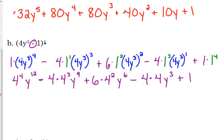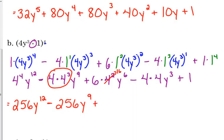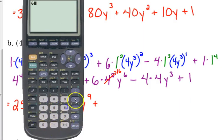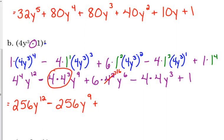4 to the 4th is 256, y to the 12th. Minus, well, guess what? That's going to become 4 to the 4th again. 4 times 4 cubed is like 4 to the 4th, so we've got 256, y to the 9th. Plus 4 squared is 16, 6 times 16... I'm not going to try and do that one in my head. Not trusting myself this morning. 6 times 16 is 96, y to the 6th. Minus 4 times 4 is 16, y cubed plus 1.